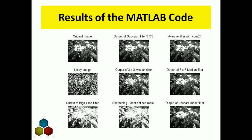I am adding to this original image a salt and pepper noise, so I got the output as a noisy image. Now here I am applying a median filter of mask size 3x3 to this original image and I got this output image. And next, here I am applying a 7x7 median filter mask to this original image, so I got this type of output image.